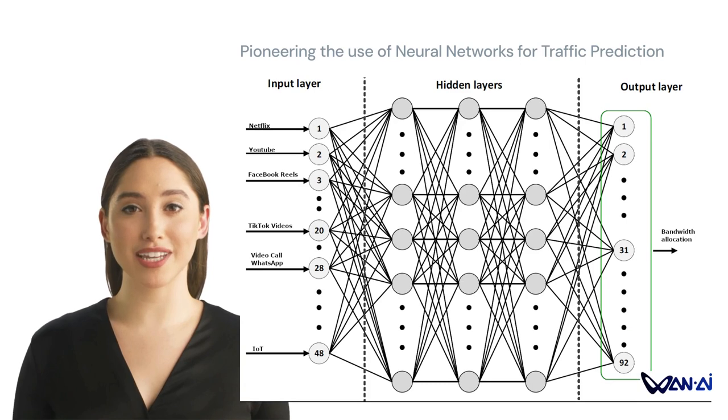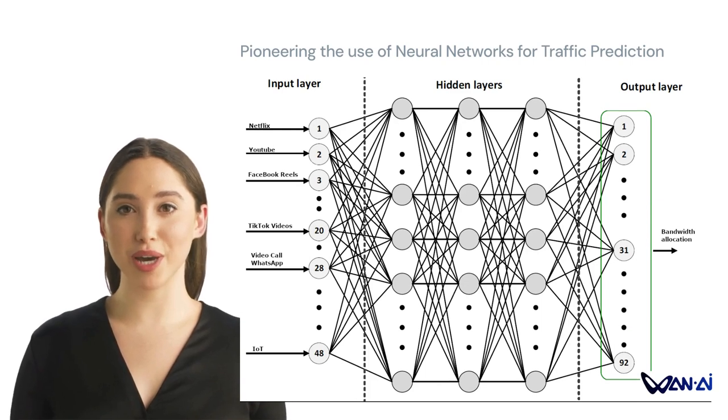At WAN AI, we are pioneering the use of deep neural networks when predicting the optimal bandwidth allocation based on the bandwidth consumption patterns of popular applications, such as Netflix and YouTube.